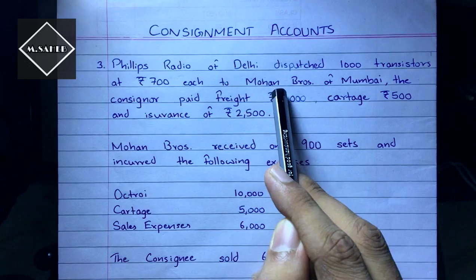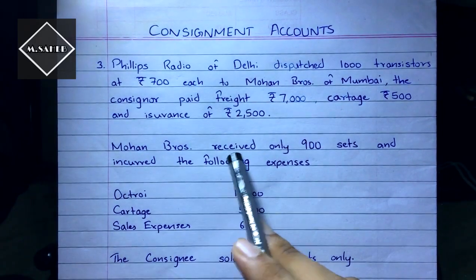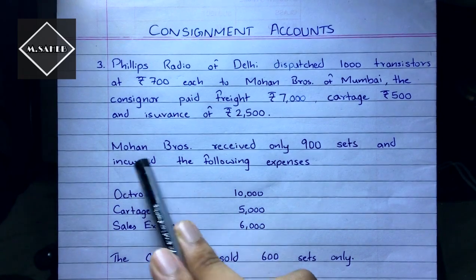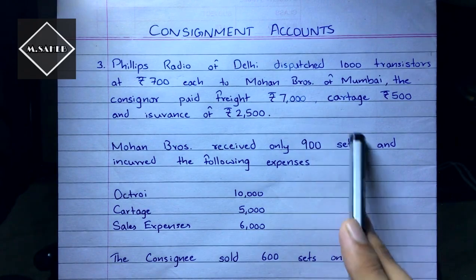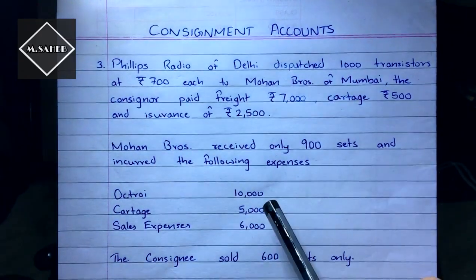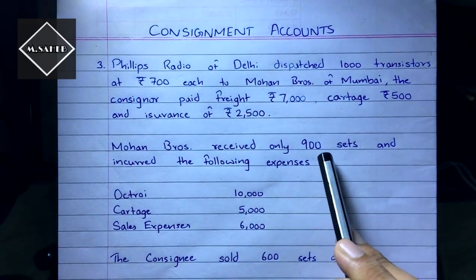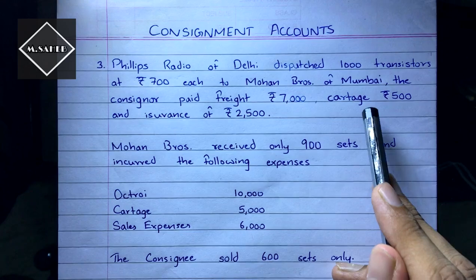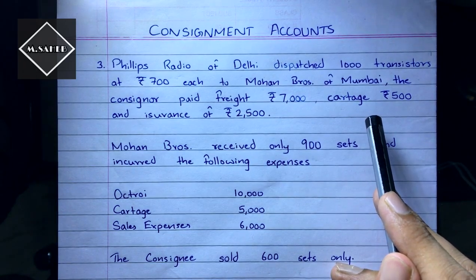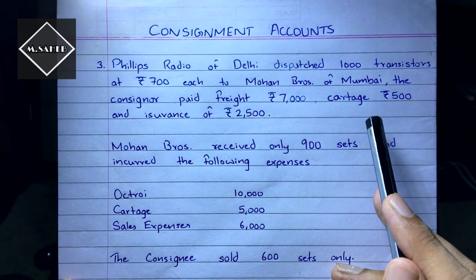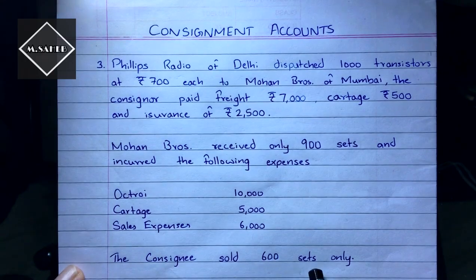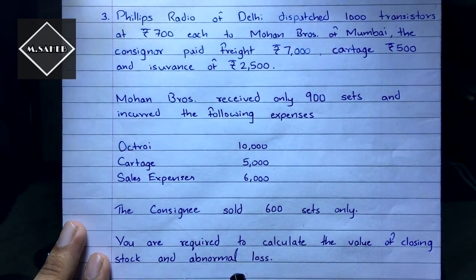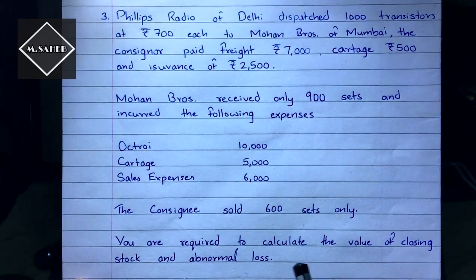Mohan Brothers received only 900 sets and incurred expenses on cartage and sales. Philips Radio sent 1,000 transistors but Mohan Brothers received only 900, meaning 100 sets were lost in transit — that is the abnormal loss. The consignee sold 600 sets. We are required to calculate the value of closing stock and abnormal loss.